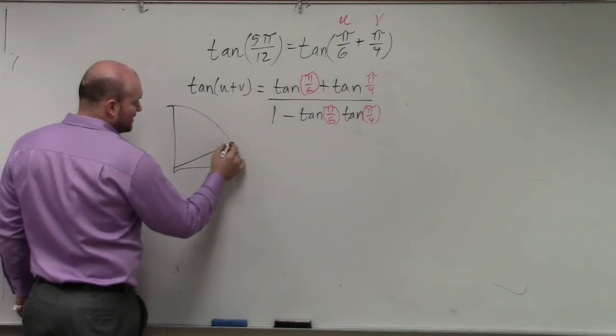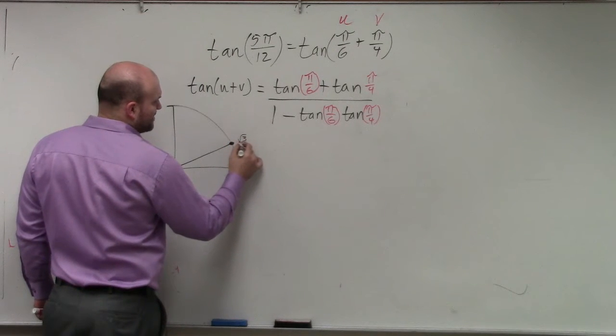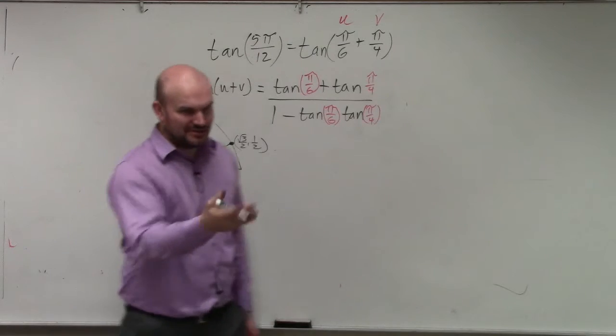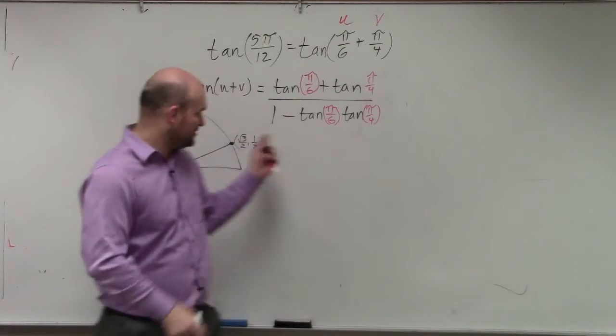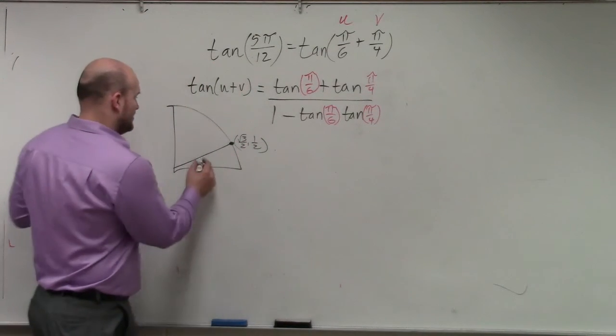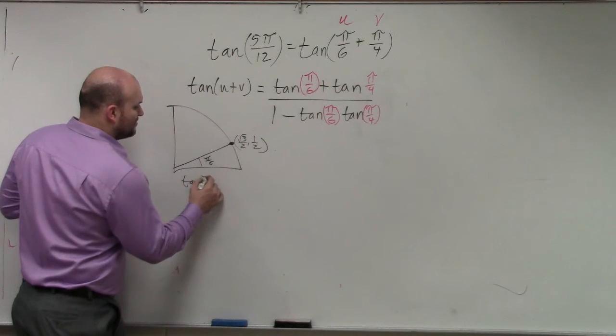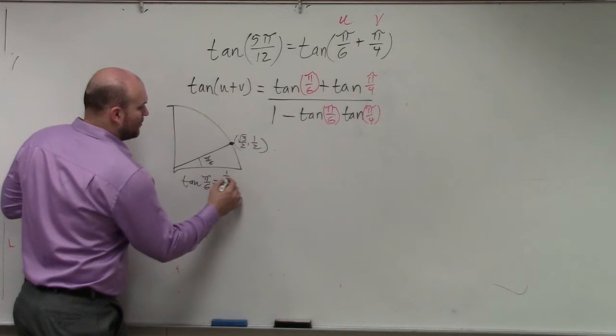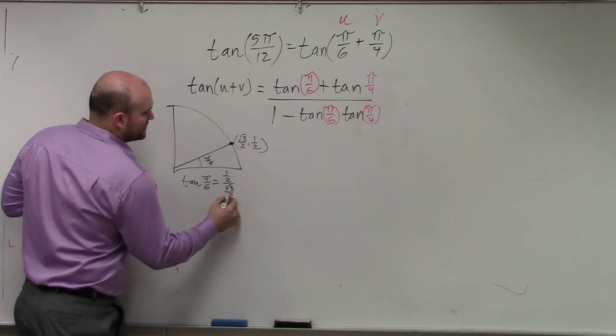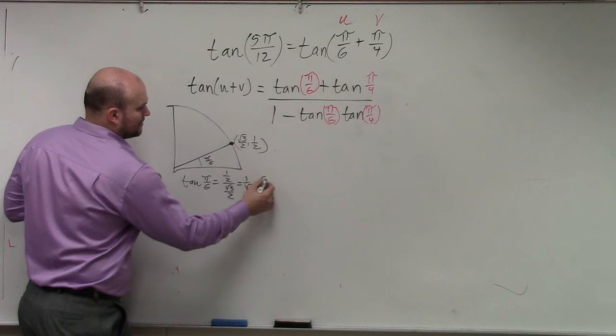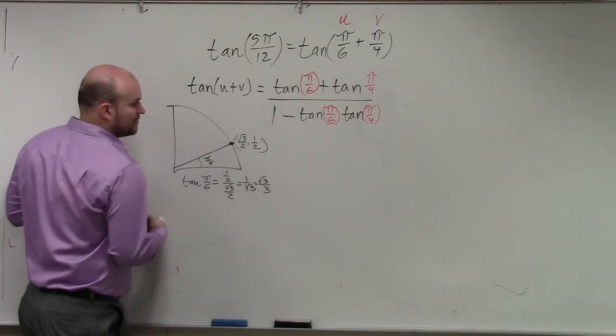So π over 6 is this angle, which has the coordinate point, square root of 3 over 2 comma 1 half. The reason why I gave you guys this test earlier, this quiz today, was so that you guys can do this as quickly as I just did. Here is your angle, π over 6. To find the tangent of π over 6, that's 1 half divided by square root of 3 over 2. When I simplify this, I get square root of 3 over 3.